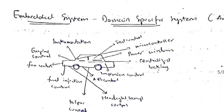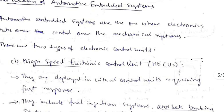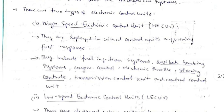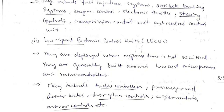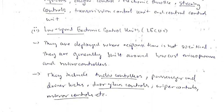The automotive embedded system can be divided into two parts: high-speed and low-speed electronic control units. High-speed units are used for the most important tasks like anti-lock braking, steering controls, and speed controls. Low-speed units are used for less critical functions like audio controller, mirror controls, and door glass controls.